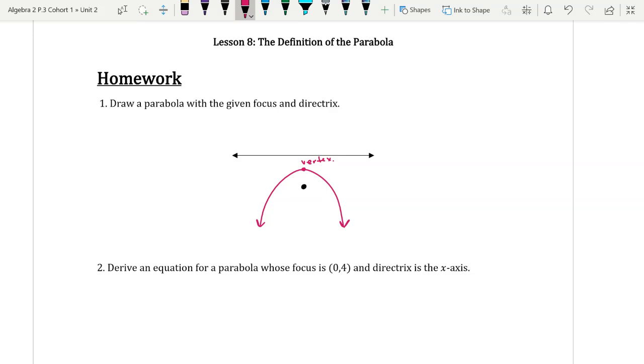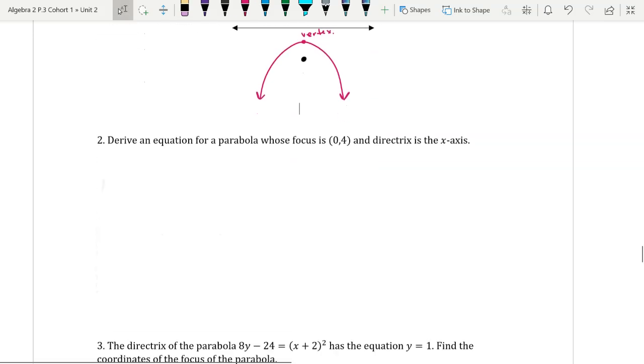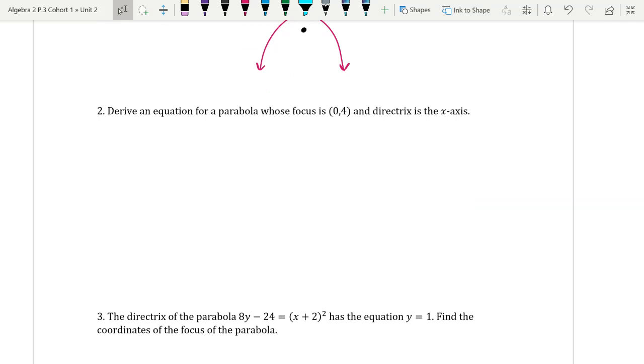Number two says to derive the equation of a parabola whose focus is (0,4) and whose directrix is the x-axis. For this, I always like to draw a little picture. So the x-axis is y equals zero. The focus is (0,4), meaning the vertex is going to be somewhere between those two. And we want to be equal distance, so the vertex is (0,2).